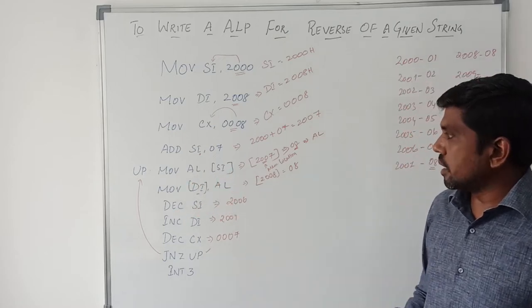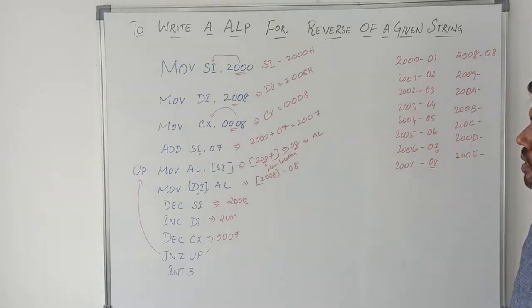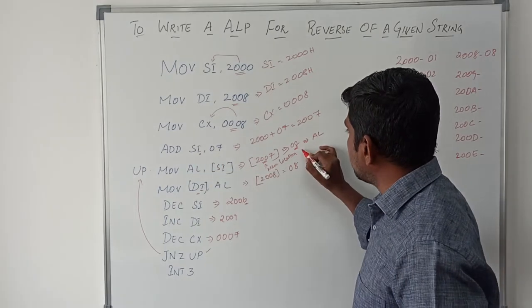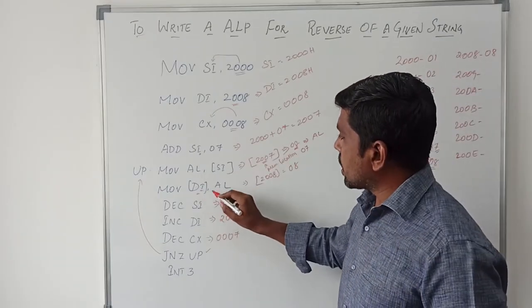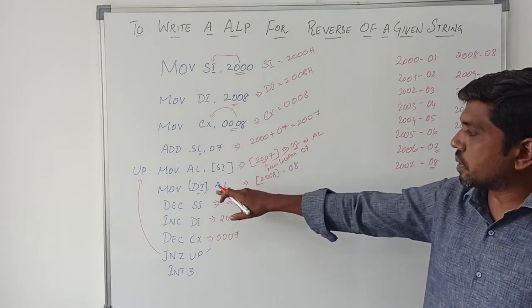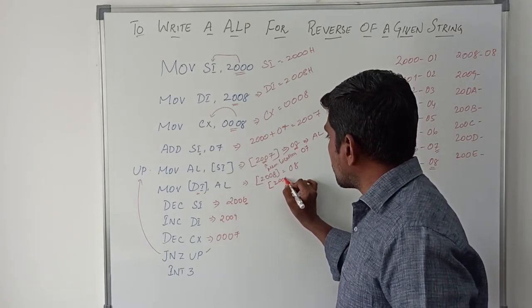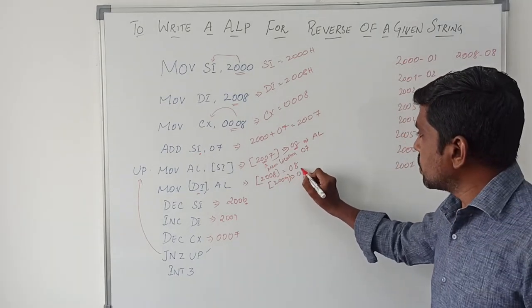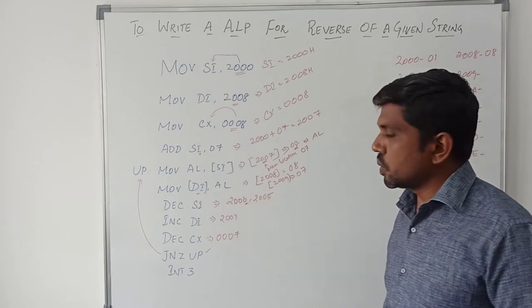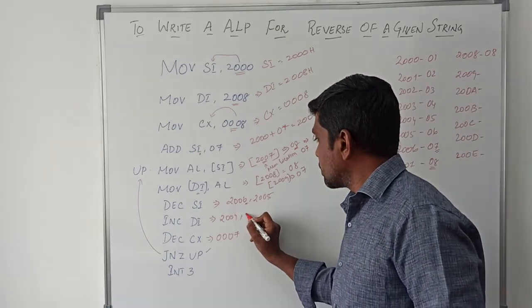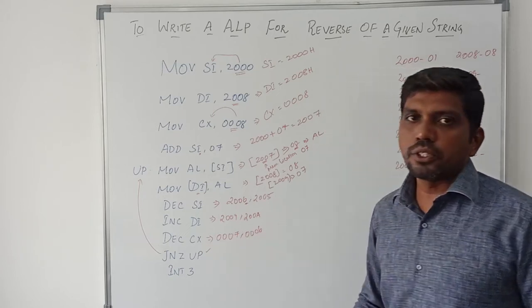Now SI value is 2006. In memory location 2006, whatever value is stored — this value is 07 — so 07 is transferred to AL. Now AL value is 07. Then MOV [DI], AL — whatever value is present in AL, that content is transferred to the memory location DI. Now the DI memory location is 2009, so in 2009 we record the data 07. Then DEC SI — after decrement, SI value goes to 2005. INC DI gives 200A. DEC CX — after decrement, the CX register value is 0006.